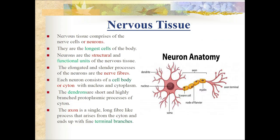Nervous tissue is the last type of tissue. It comprises neurons or nerve cells, which are the longest cells of our body and the structural and functional unit of the nervous system. Each neuron consists of a cell body called a cytone with nucleus and cytoplasm. The dendrons are short, highly branched protoplasmic processes of the cytone. The axon is a single long fiber-like process arising from the cytone ending in fine terminal branches called axon terminals.